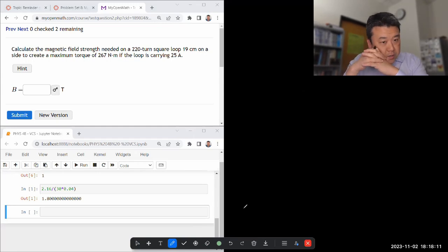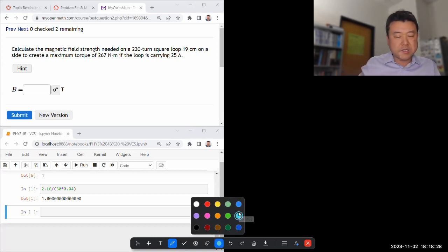This question says calculate the magnetic field strength needed on a square loop to create a maximum torque. Okay, so let me first draw the square loop. Let me just draw it in the easiest way.